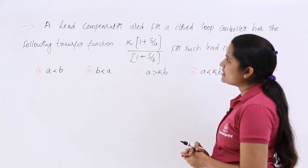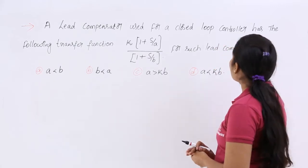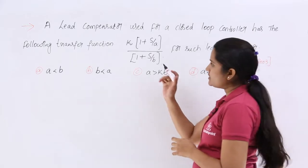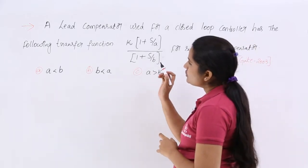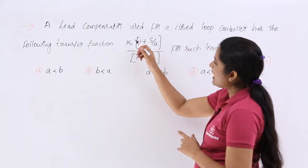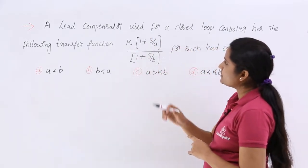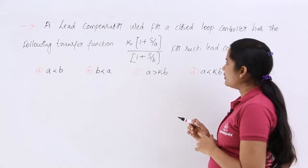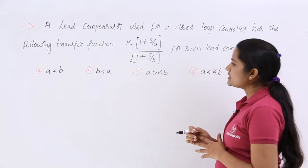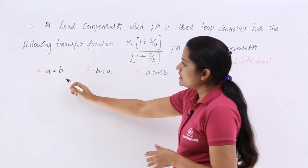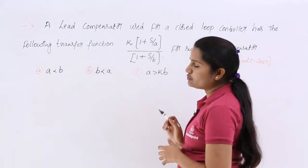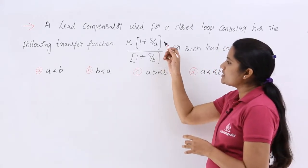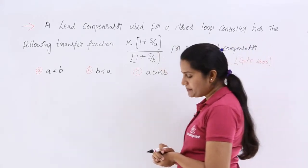A lead compensator used for a closed loop controller has the following transfer function. The lead compensator has this transfer function which is used in controlling. For such a lead compensator, which condition of A and B in this transfer function is suitable?